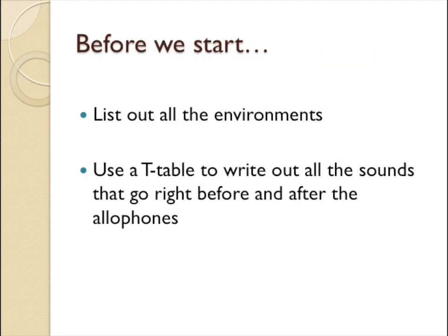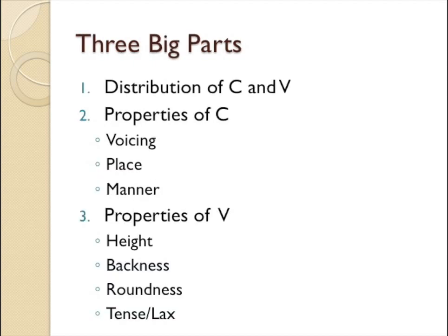Now before we start finding the underlying form, let's make sure that we have all the tools that we need. We need to list out all the environments of the sounds that you're investigating. I would suggest using a T-table to list out all the sounds that go right after and right before the allophones. After listing out all your environments, we can move on to the checklist.